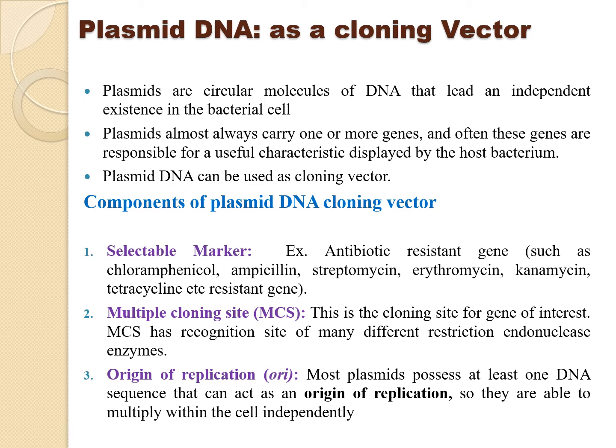A cloning vector is a plasmid — a circular molecule of DNA that leads an independent existence in bacterial cells. Plasmids almost always carry one or more genes, and these genes are often responsible for useful characteristics displayed by the host bacteria. Plasmid DNA can be used as a cloning vector when it has the ability to get ligated with a foreign DNA and be inserted into a bacterium to divide and form more recombinant DNA.